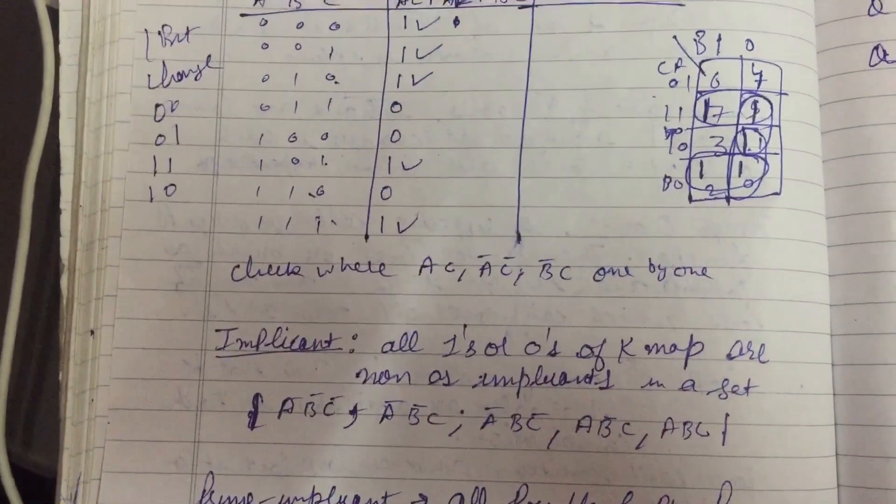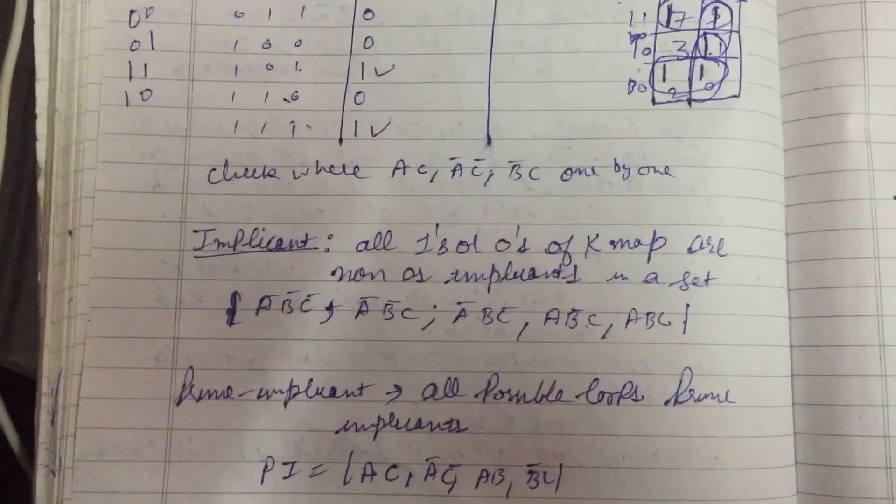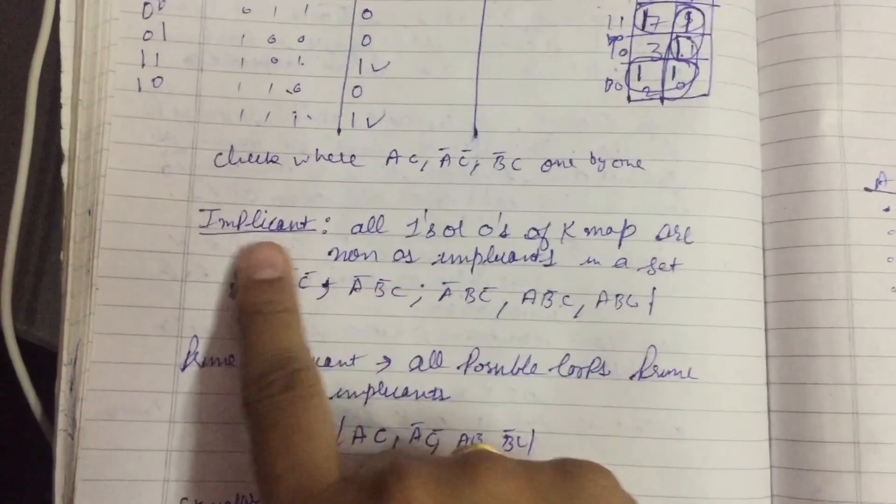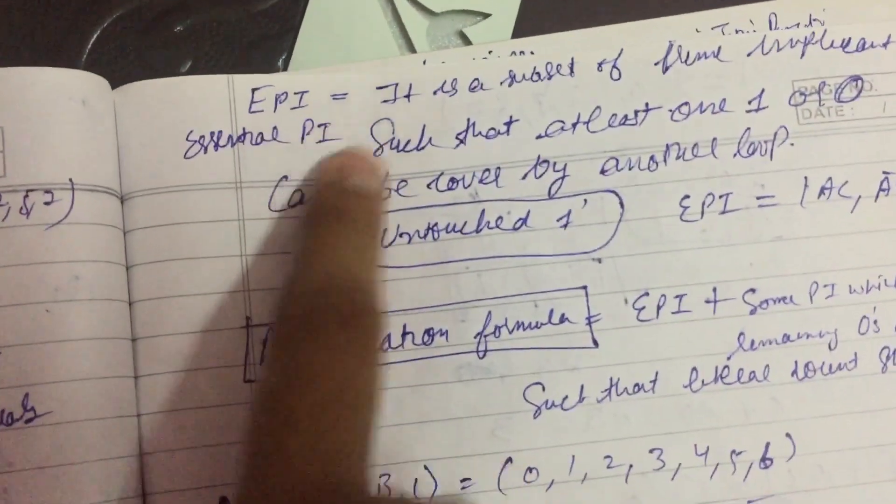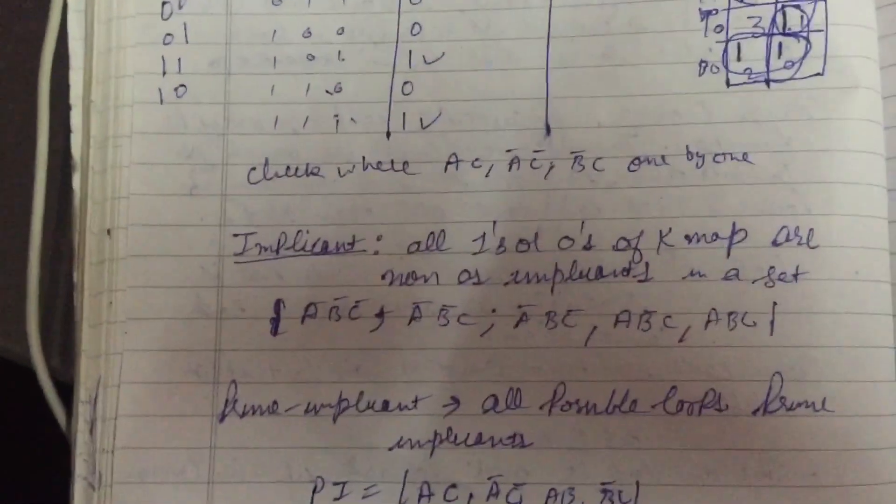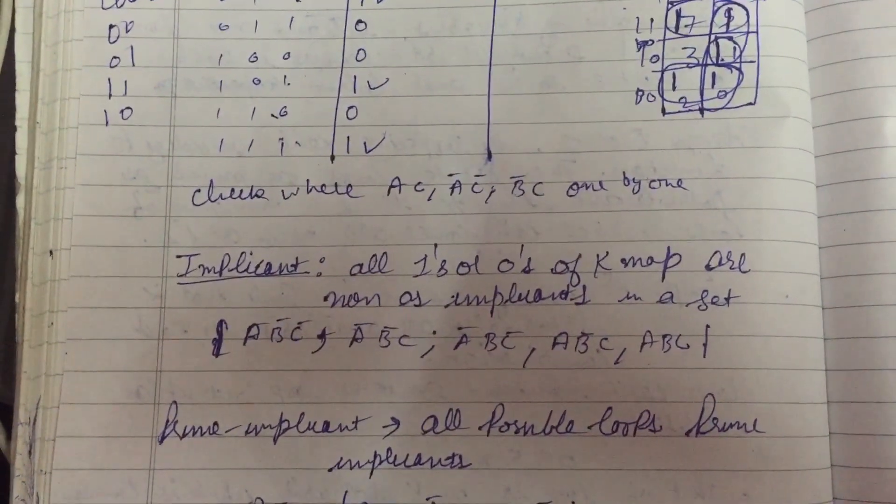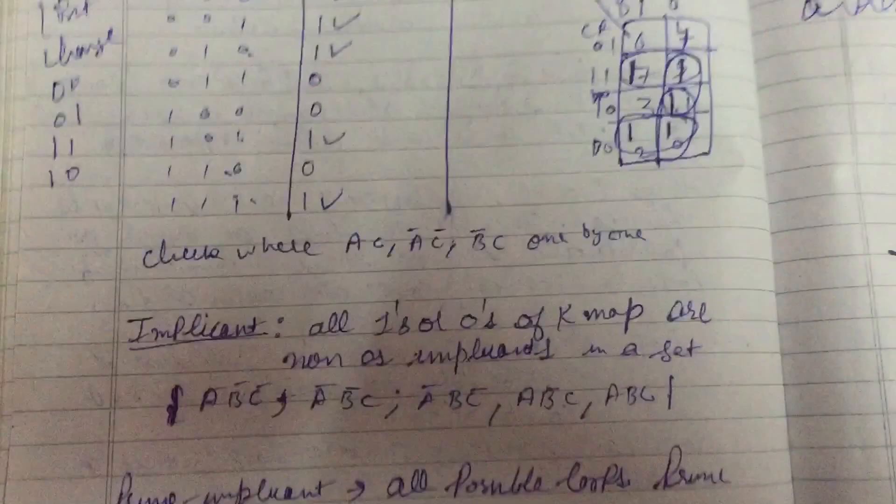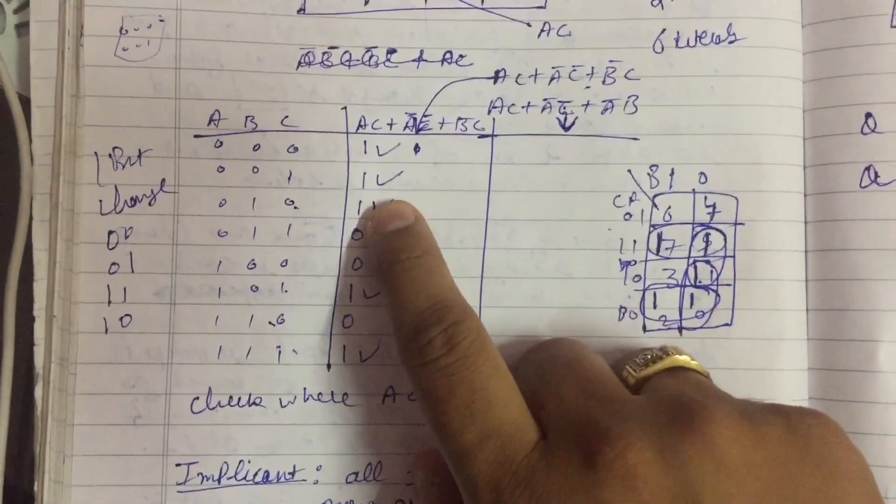Here are some terms. There are basically three terms used in K-map. First one is implicant, second is prime implicant, and third one is EPI. Now firstly, know about the implicant. All ones and zeros of K-map are known as implicant in a set. Here is the example. All number of ones and zeros are implicants in K-map.